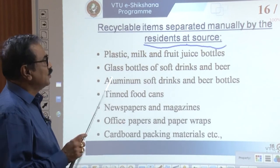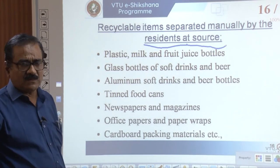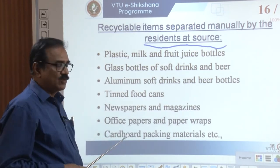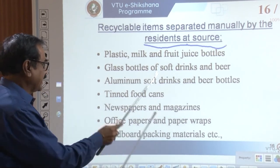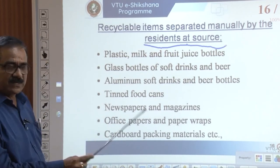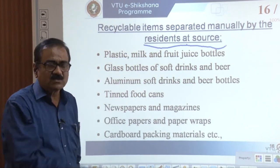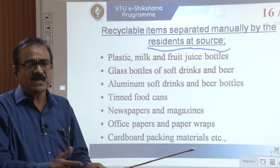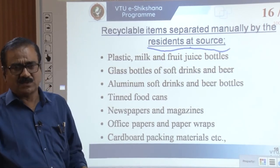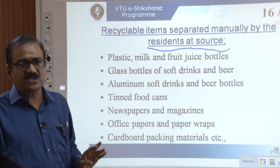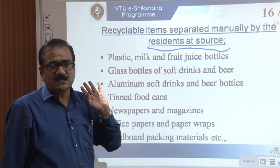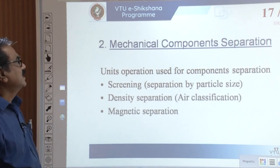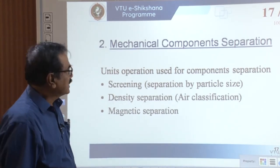Recyclable materials include plastic milk and fruit juice bottles, glass bottles of soft drinks and beer, aluminum soft drink and beer cans, tinned food cans, newspapers and magazines, office papers and paper wraps, and cardboard packing material. This becomes a manual separation of components at the residence or at the source of generation. So let us go to mechanical component separation.